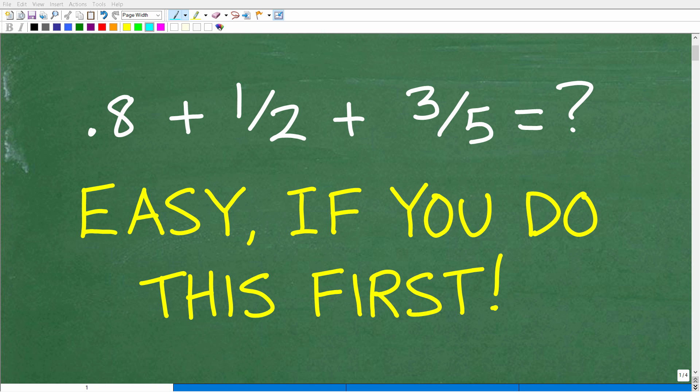Okay, so without using a calculator, it's actually pretty easy to find the sum of this decimal, 0.8, and these two fractions, which is 1 half and 3 fifths. But this is easy if you do this one thing first.